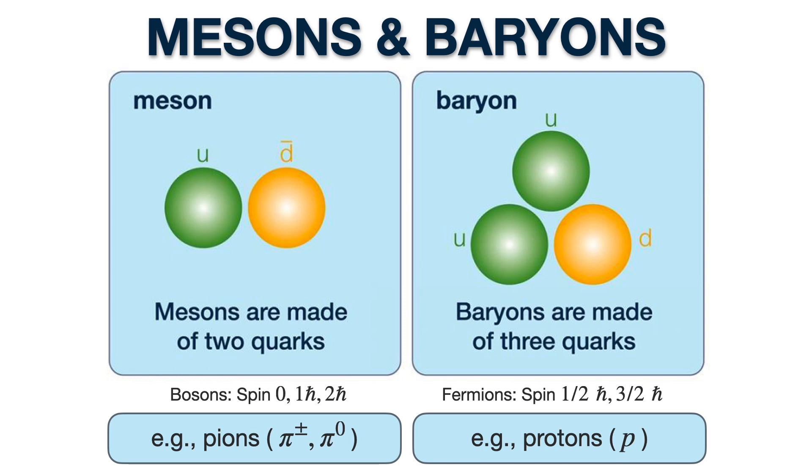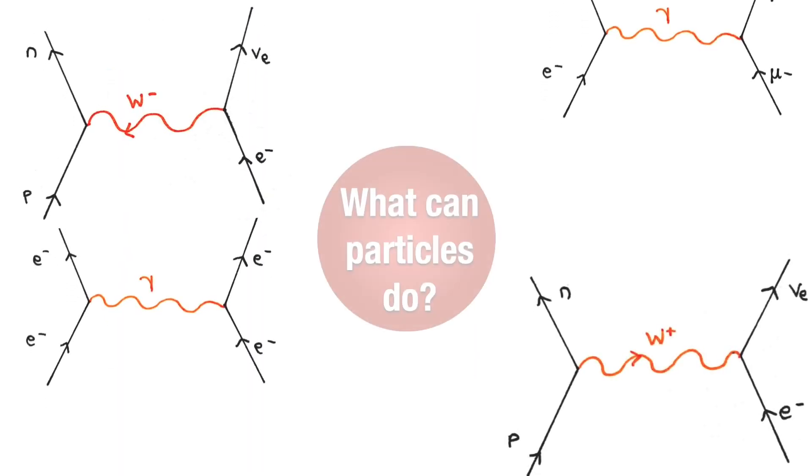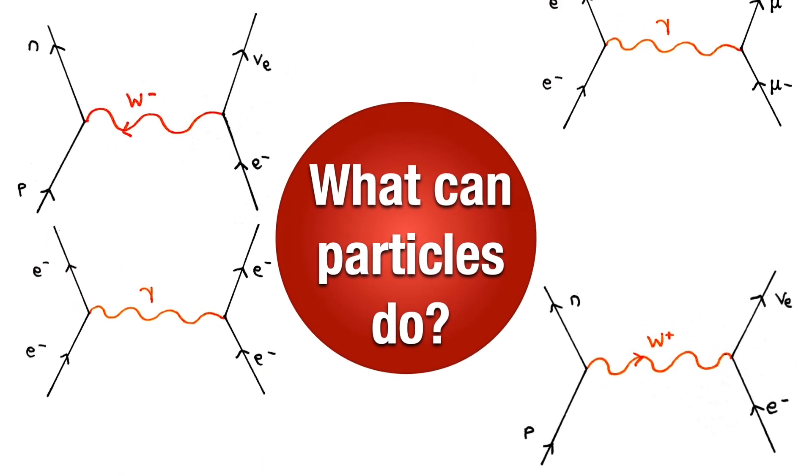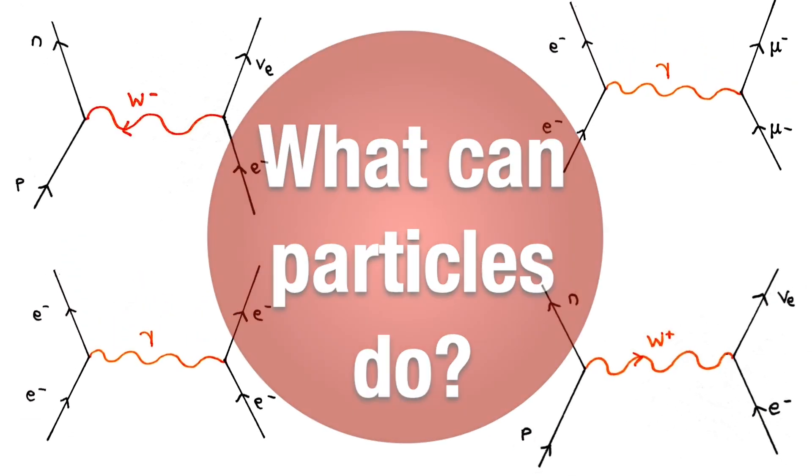And an example of an anti-baryon would be the anti-proton. So now that we saw the different particle properties, we can ask ourselves, what can particles do?